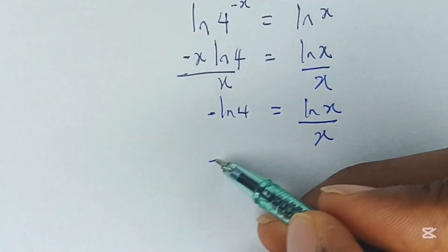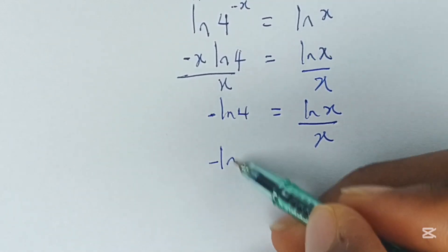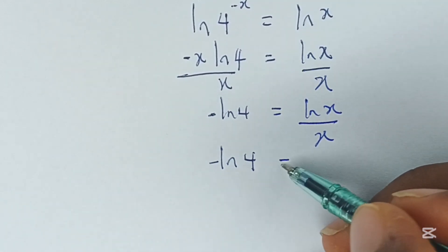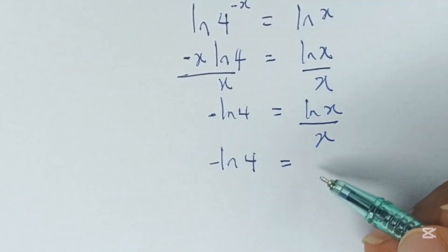So we have negative ln of 4 to be equal to ln of x divided by x.